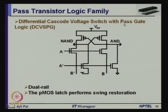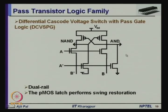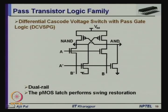The last family member is differential cascode voltage switch with pass gate logic, DCVSPG. Here two PMOS transistors are connected back to back in the form of a latch, along with two pass transistor logic networks of the same kind. At one output you get AND and at the other output NAND. The pass transistor logic realization is done in the same way as before; the only difference is that instead of an inverter, two cross-coupled PMOS transistors are used for swing restoration. Since pass transistors directly drive the outputs, isolation is less here as well.